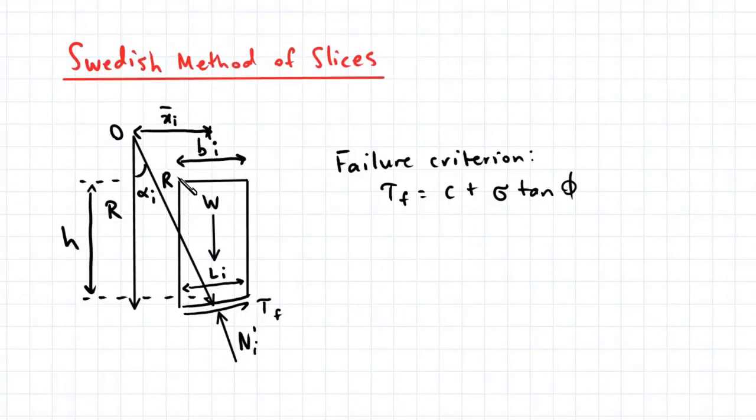Here you can see a single slice which makes up part of a slip circle. The center of the slip circle is denoted by O and the distance from the center of the slip circle to the failure plane is denoted by R, the radius. The radius R also extends to the center of our slice here. The angle that the center of the slice forms with the center of the slip circle is denoted by this angle here, alpha i.